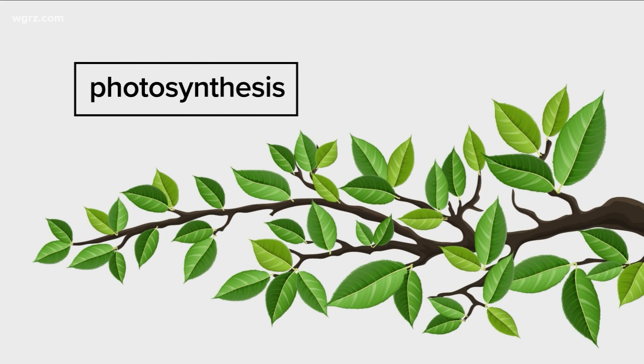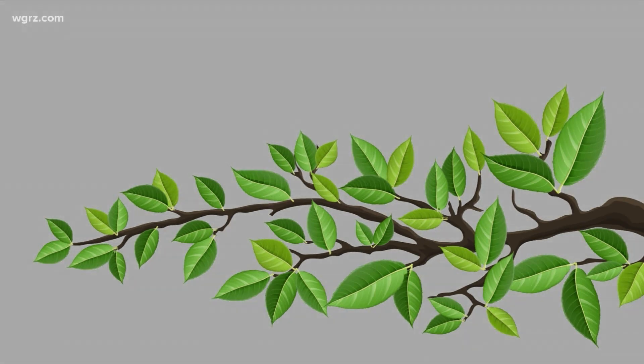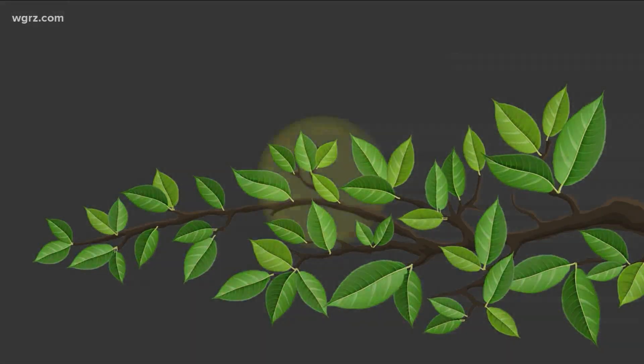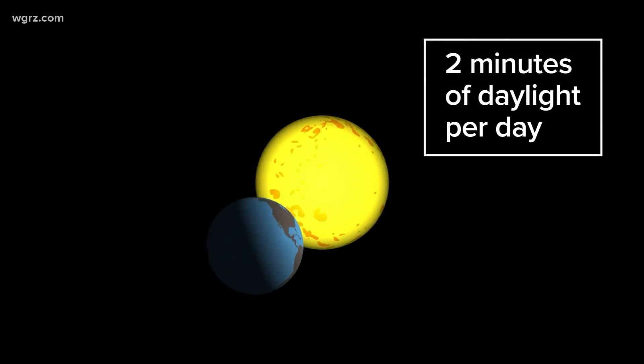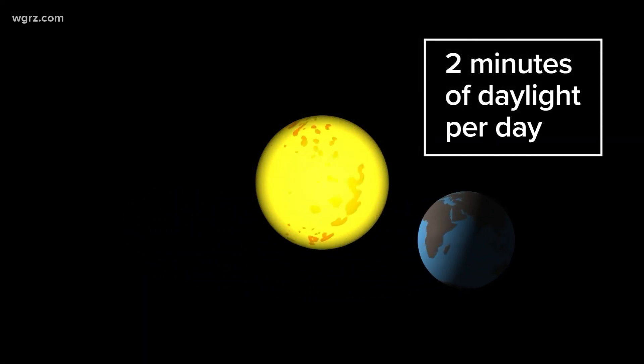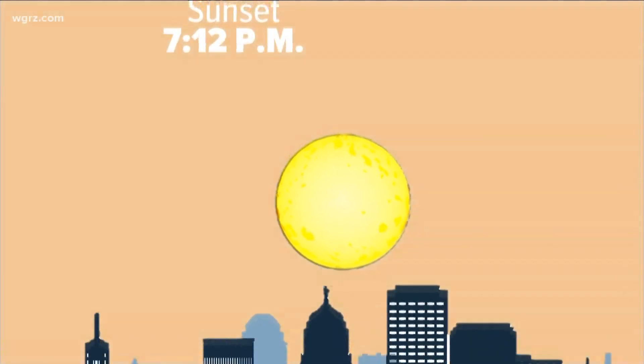But as we get closer to fall, there's less sunlight. In fact, over the next couple of weeks, we'll lose about two minutes of daylight per day as the earth moves around the sun. Sunset tonight will happen at 7:12 p.m.